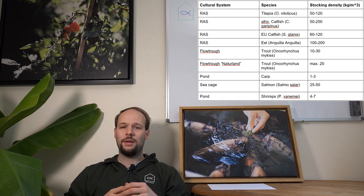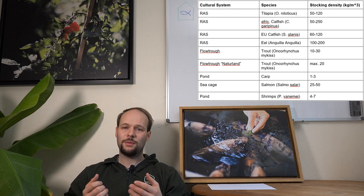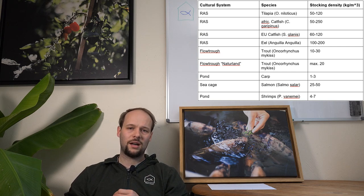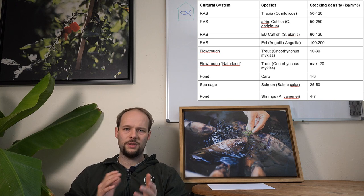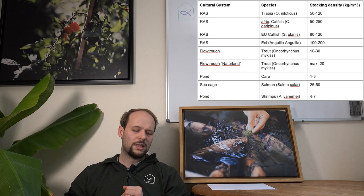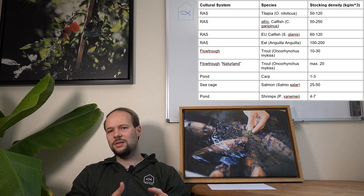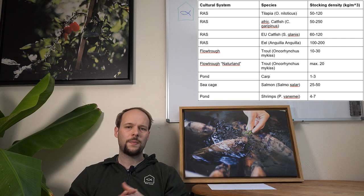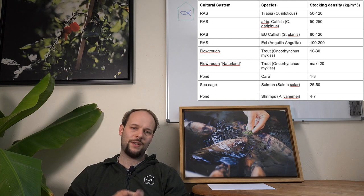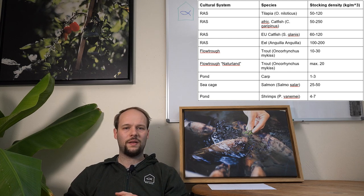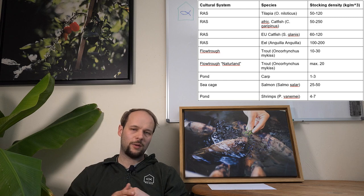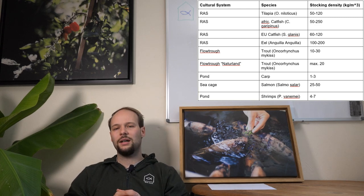Of course then you also have an open net pen, many times used here in Europe for salmon production, and there the densities are between 20-50 kg per cubic meter. Sometimes even less, sometimes more. So all the densities that you can see here now is just kind of range of densities that you can see, and they should not be seen as fixed numbers. And they can be always a little bit higher but they can also be lower on the other side.